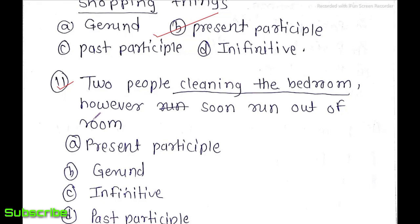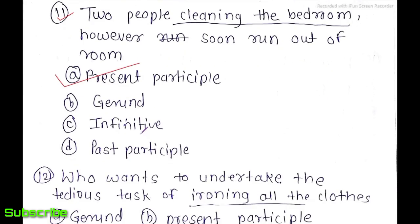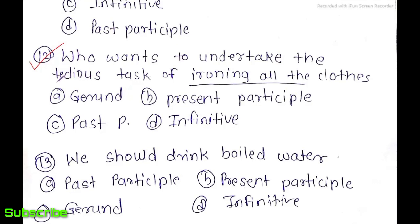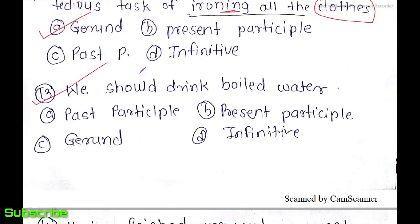Question 11: 'Two people cleaning the bedroom however soon run out of the room' — 'cleaning' is an action by two people, but the helping verb is missing, so this is the present participle. Question 12: 'Who wants to undertake the tedious task of ironing all the clothes?' — 'ironing' here, no action is being performed directly, so this is simply a gerund.